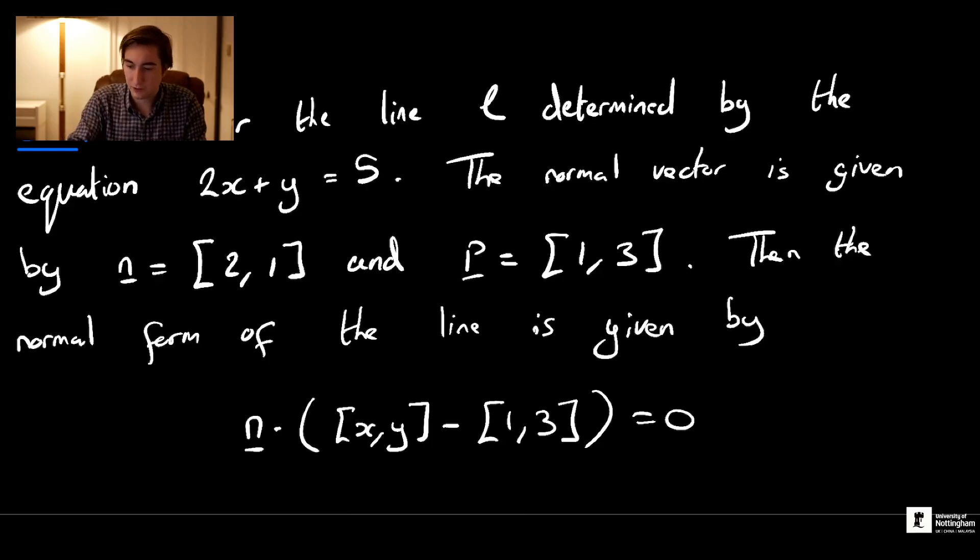That's where we'll conclude this video. We've talked about how to write lines in R2 in the normal form using normal vectors and scalar products. In the next video we'll talk about the vector form of lines, using direction vectors, and we'll see how this generalizes easily to R3 and even Rn — unlike the normal form which is specific to R2. As always, read the notes and attempt the problems in the module handbook pertaining to this material. Thanks very much for watching and see you in the next video.